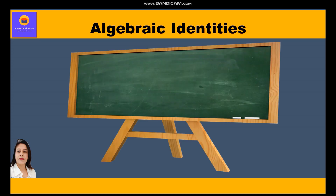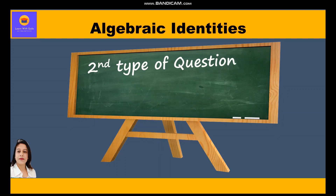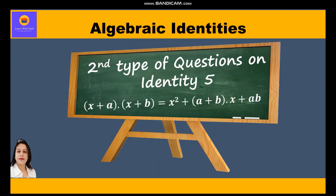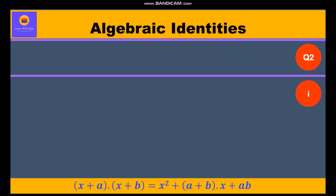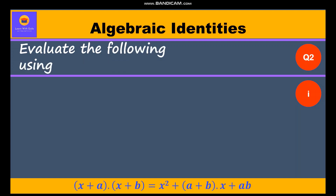Hi everyone. In this video on algebraic identities, we are going to take up our second type of question related to identity 5. It says: by using identity 5, evaluate the following. So let's start with the first question: 206 into 205.